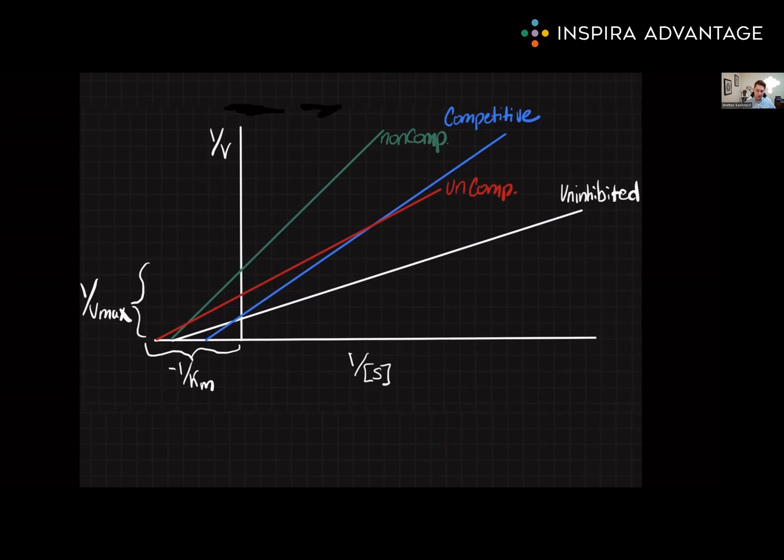To do well on the MCAT, you should be able to interpret both the Lineweaver-Burk plot as well as the Michaelis-Menten plot when it comes to enzyme kinetics. Because enzymes are on both the biochem and chem-phys sections, this is a very high yield subject. If anything is unclear, try rewatching the video one more time. And as always, I recommend putting this into your Anki cards.